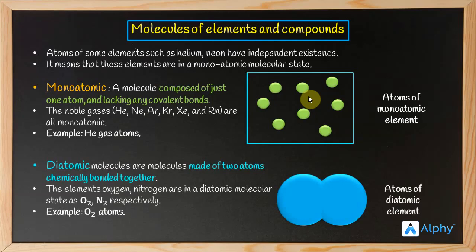Diatomic molecules are in atomic molecular state. Some elements' atoms remain together. For example, oxygen cannot remain alone because it lacks two valence electrons. So it bonds with another oxygen atom through covalent bonding, and they remain together.